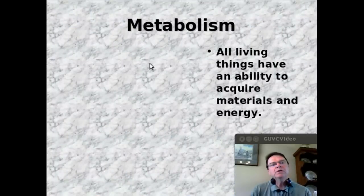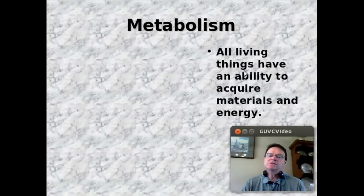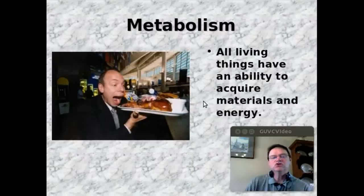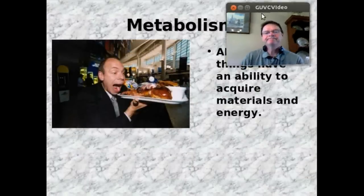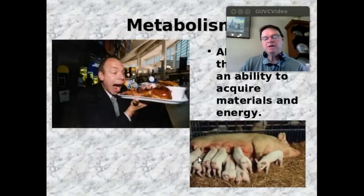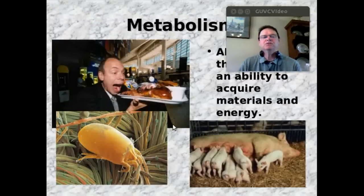Not only are cells organized and contain a genetic code, but all living things also have the ability to acquire materials and energy — like this guy here having lunch, or like these piglets having breakfast, or like this dust mite that's eating dead skin cells from you. Hope you cleaned your room recently.